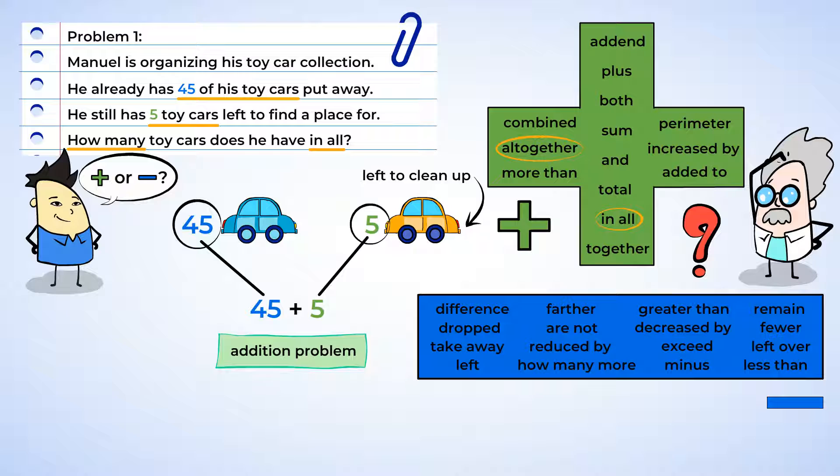Since 45 plus 5 is 50, you've just calculated that Manuel has 50 cars in all. You understood this was an addition problem because the 45 cars were put together with the 5 cars to make 50 cars in all.